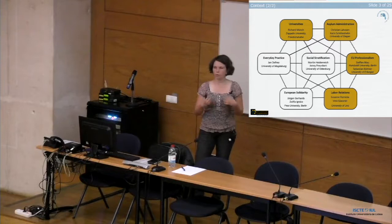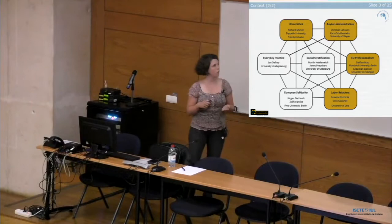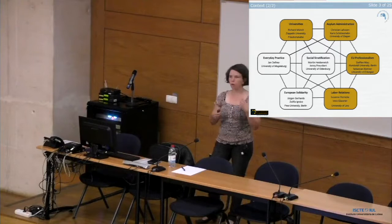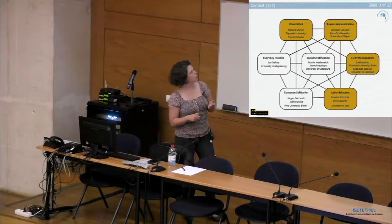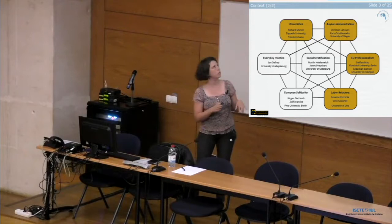Colleagues at the Free University in Berlin and other Berlin universities are studying whether something like a European solidarity is emerging — solidarity among people in Europe not only with their own country but also across countries. Then there is everyday practice: how the European integration process influences traveling, phone calls, marriages, friendships, and so on. There's also social stratification — is there a transnational social stratification? Can we observe a European middle class, a European working class, and so on?